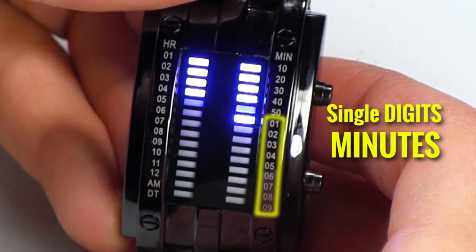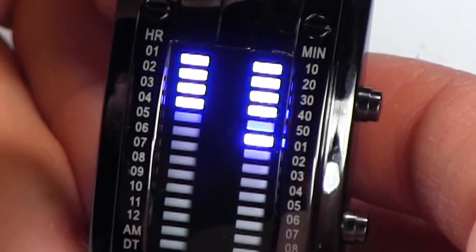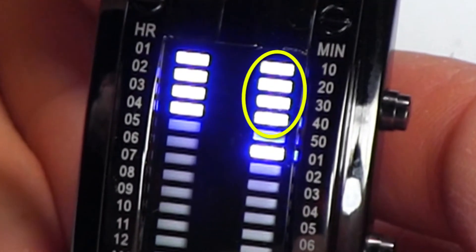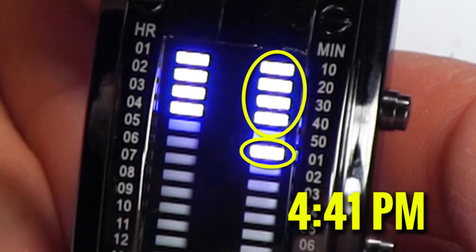And then below that is one through nine. Those are the single digits. In this case, it's showing four lights on the top, which means 40. And in the single digits, it goes to one. So this is 41. So the time now reads 4:41.